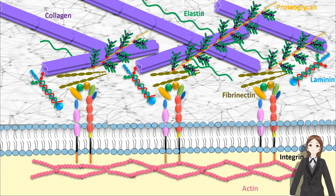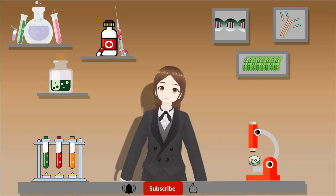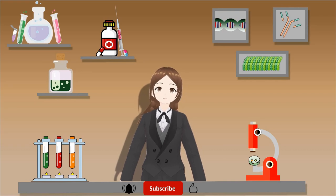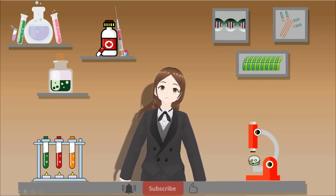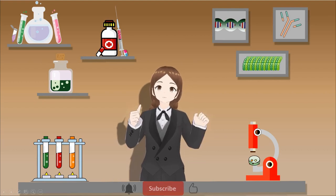Here you can see all components of the extracellular matrix together, such as collagen, elastin, proteoglycan, laminin, and fibronectin. Thank you for watching. Please subscribe to this channel, and if you like the contents of this video, please like it.